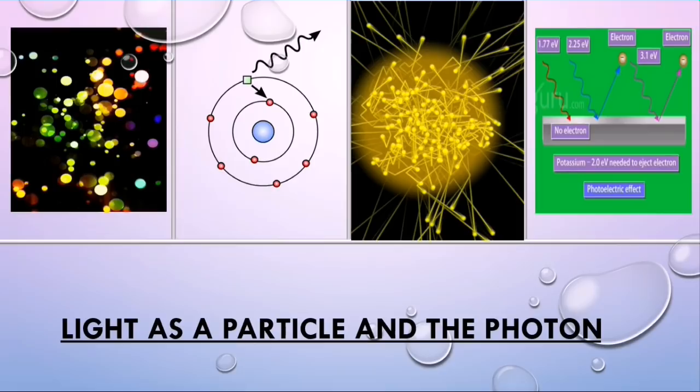Newton's theory failed to explain the diffraction, interference and polarization of light. Therefore, it was abandoned. It re-emerged in the 20th century as Einstein described Newton's conception of physical reality.